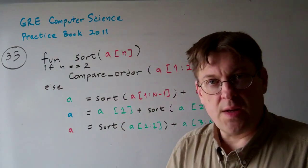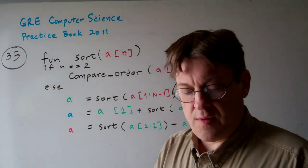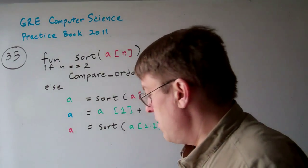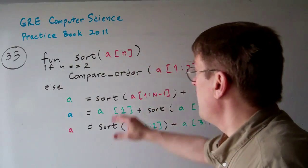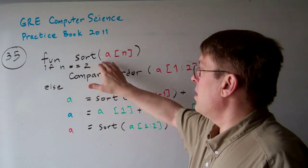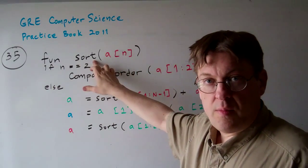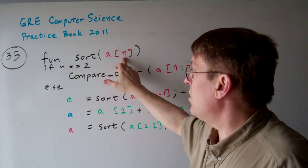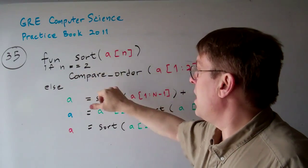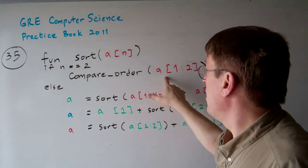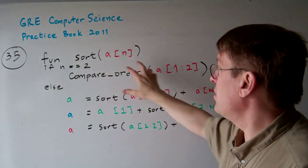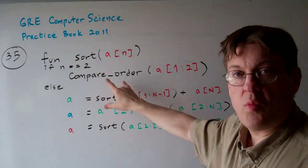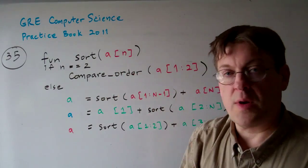I drafted a little pseudocode so you can see what we're talking about. Basically, we have this recursive sort function. If n equals two, we compare the two items and put them in order — that's one compare operation.